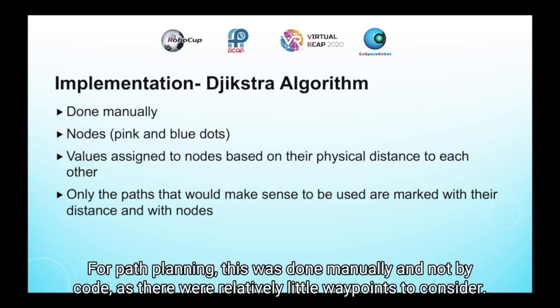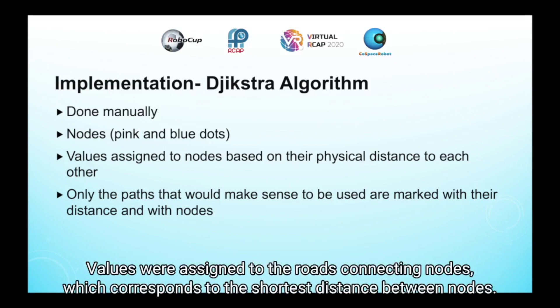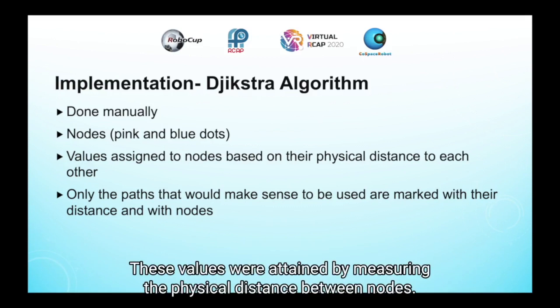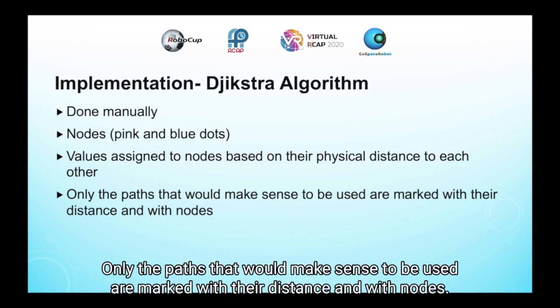For path planning, this was done manually and not by code, as there were relatively few waypoints to consider. In the preliminary map, the junctions and waypoints were set as nodes, marked as pink or blue dots. Any roads were assumed to be the possible paths the robot could take, not the lines. Values were assigned to the roads that connected the nodes, which corresponds to the shortest distance between the nodes. These values were attained by measuring the physical distance between nodes. Only the paths that would make sense to be used are marked with their distance and with nodes.